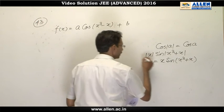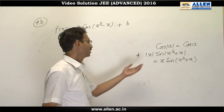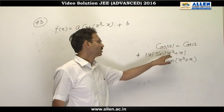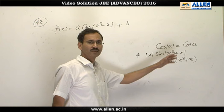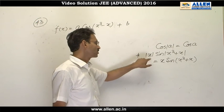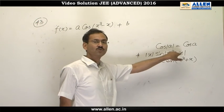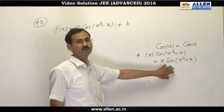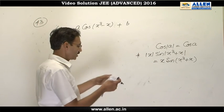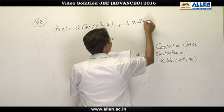Now this |x|sin(|x³+x|) is the same as x·sin(x³+x). There is no difference between these two, because if x is positive, this is x and this is x³+x. So both are equal when x ≥ 0. If x is less than 0, it is -x and it is sin of (-x³-x). Minus will be cancelled. So even if x is less than 0, both are equal. So I can write my function as b times x·sin(x³+x).